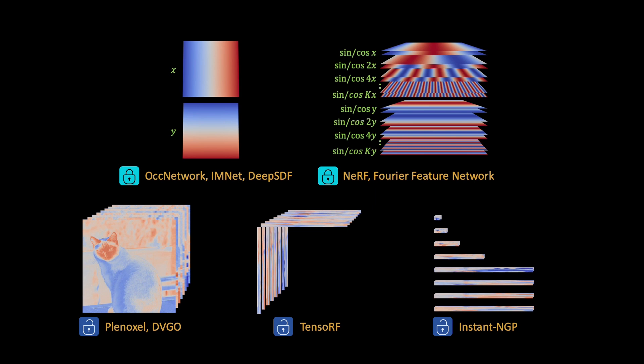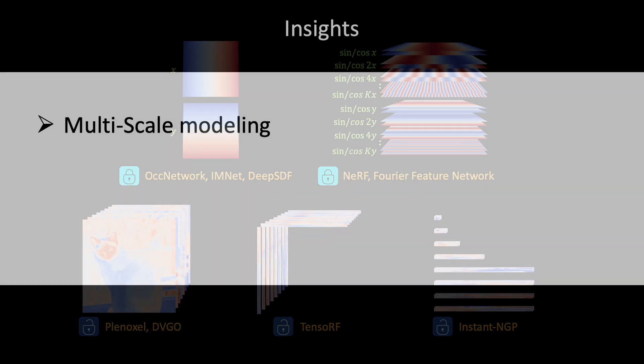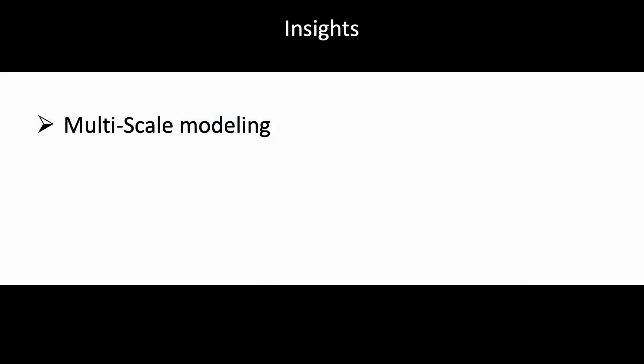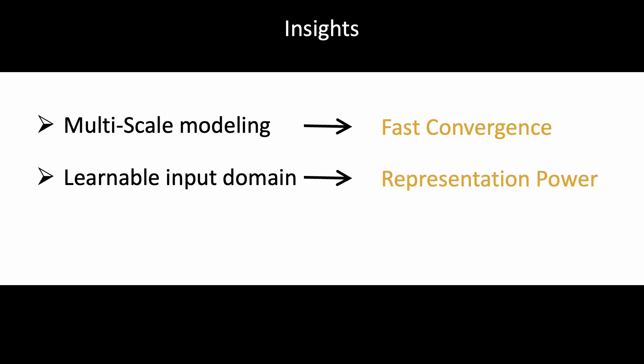What insights can we gather from this? The multiscale modeling can be observed in NeRF, where the Fourier multiscale transformation achieves fast convergence. The learnable input domain allows for better representation power and the matrix decomposition is able to provide high compactness without collision.